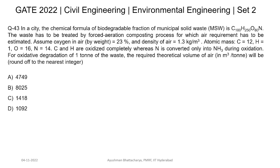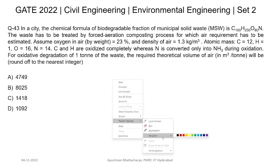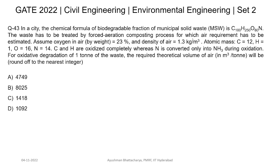Question number 43 from GATE 2022 Set 2: in a city, the chemical formula of the biodegradable fraction of municipal solid waste is given. The waste has to be treated by forced aeration composting process for which the aeration air requirement has to be estimated. Assume oxygen in air is 23% and density of air is 1.3 kg per meter cube. Atomic mass: C=12, H=1, O=16, N=14.